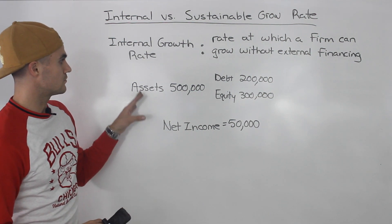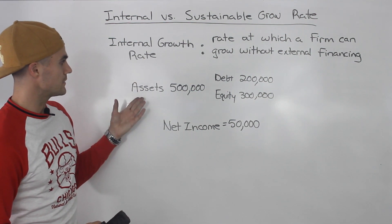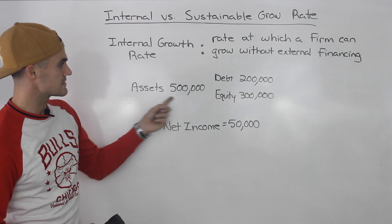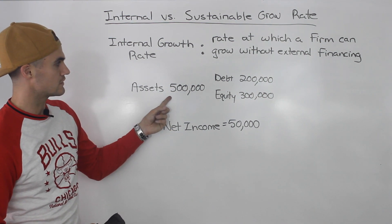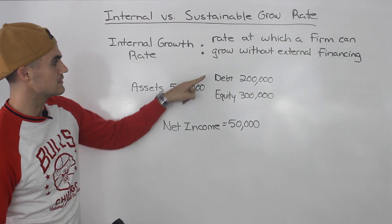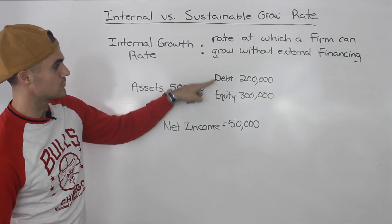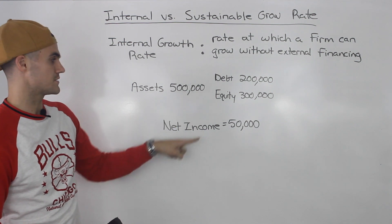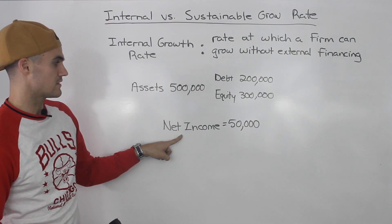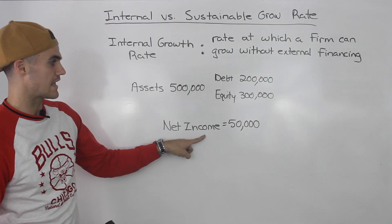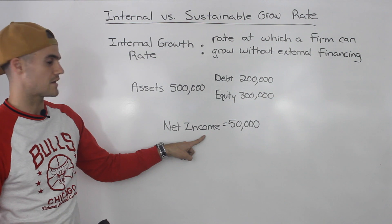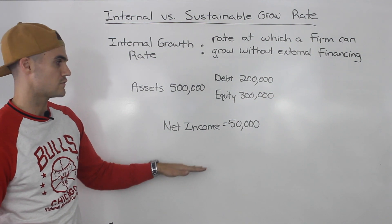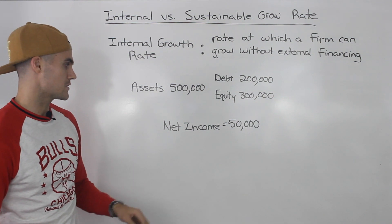So we have a company with a simple balance sheet. They've got assets of $500,000 on the left side. The debt is $200,000 and equity is $300,000. This company has net income of $50,000 — that last line of the income statement.